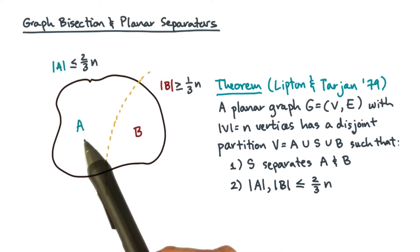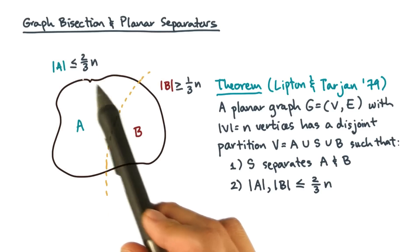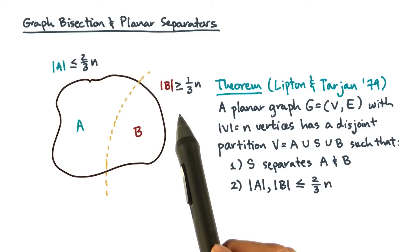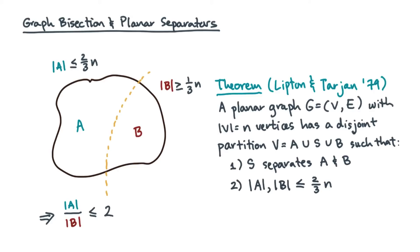Because if one of the partitions has at most two-thirds n vertices, then the other has at least one-third. That, in turn, means that the larger of the two partitions is no more than twice the size of the other. If the two partitions are within a factor of two of each other, then that's pretty balanced.